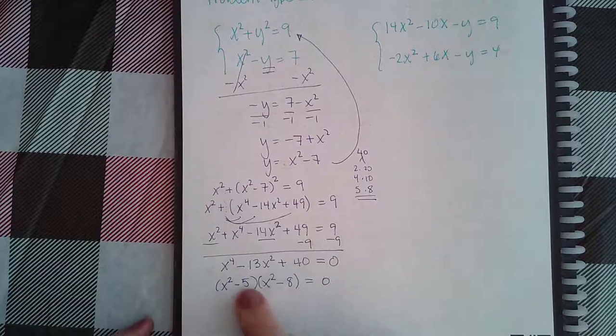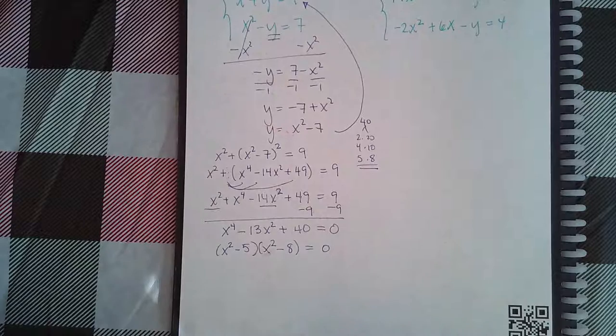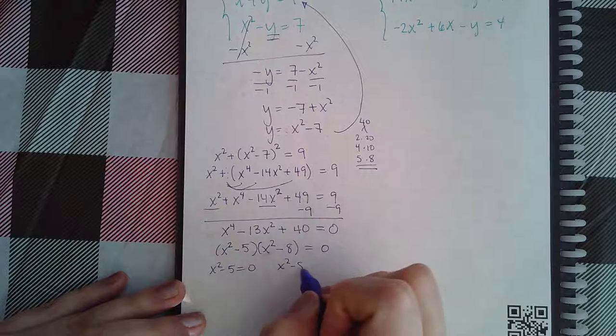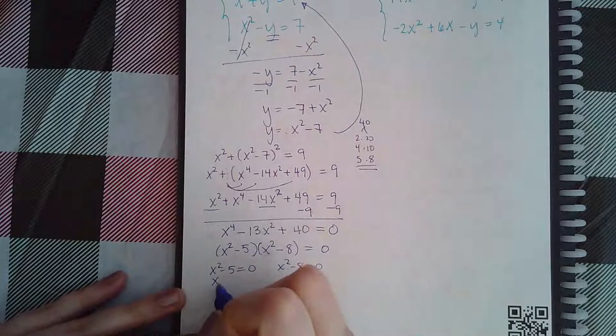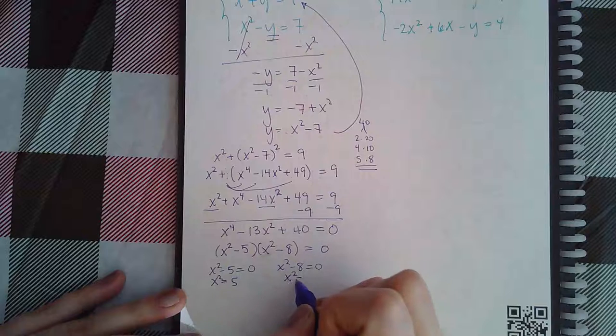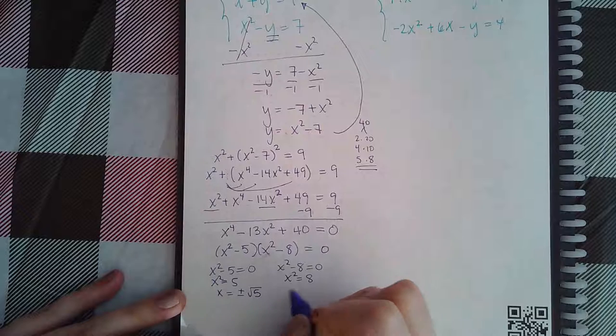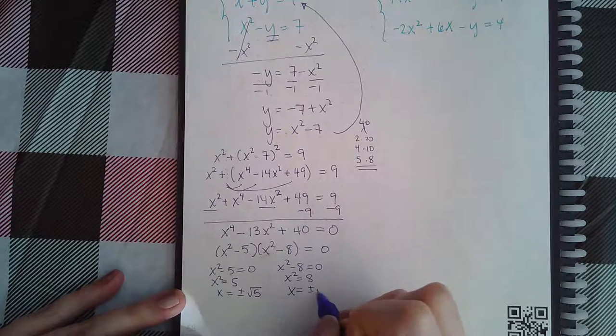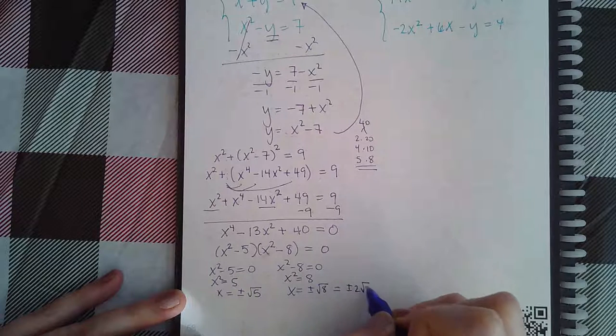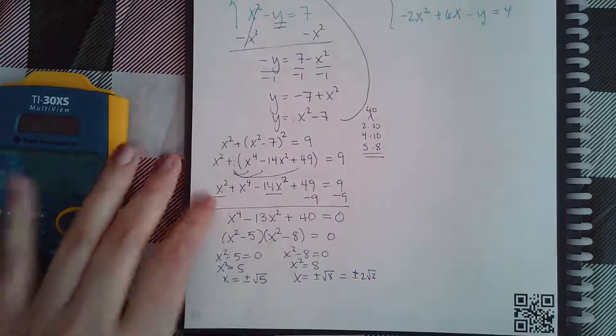If I foil this out I do in fact get these three terms. I'm going to set each one of these factors equal to zero, so I get x² equals 5, x² equals 8. I get x equals plus or minus the square root of 5, x equals plus or minus the square root of 8 which is also plus or minus 2 square root of 2 if you simplify.